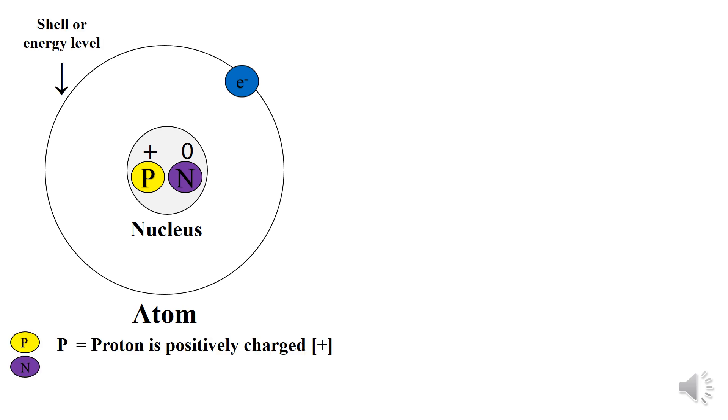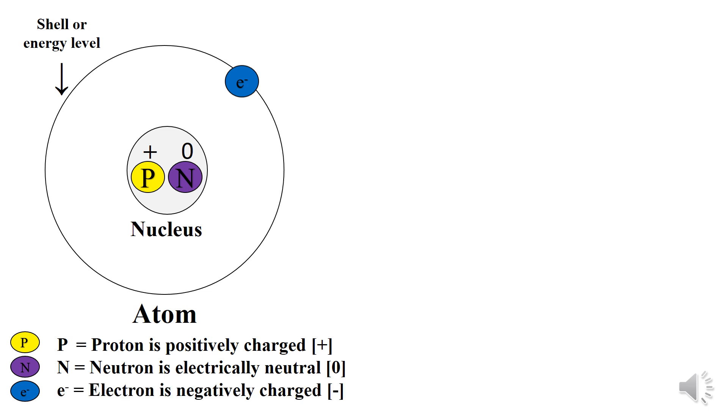Atom is the smallest unit of an element. It has a central nucleus and contains positively charged protons and electrically neutral neutrons, with the negatively charged electrons orbiting around the nucleus in their respective shells or energy levels. I have color coded the subatomic particles: proton is positively charged, neutron is electrically neutral, and electron is negatively charged.